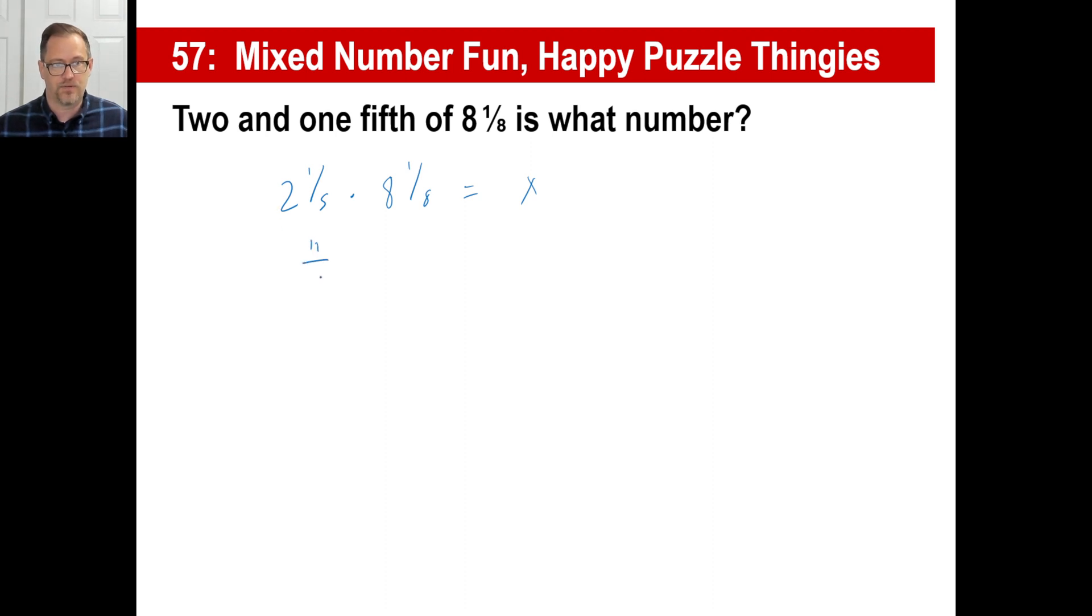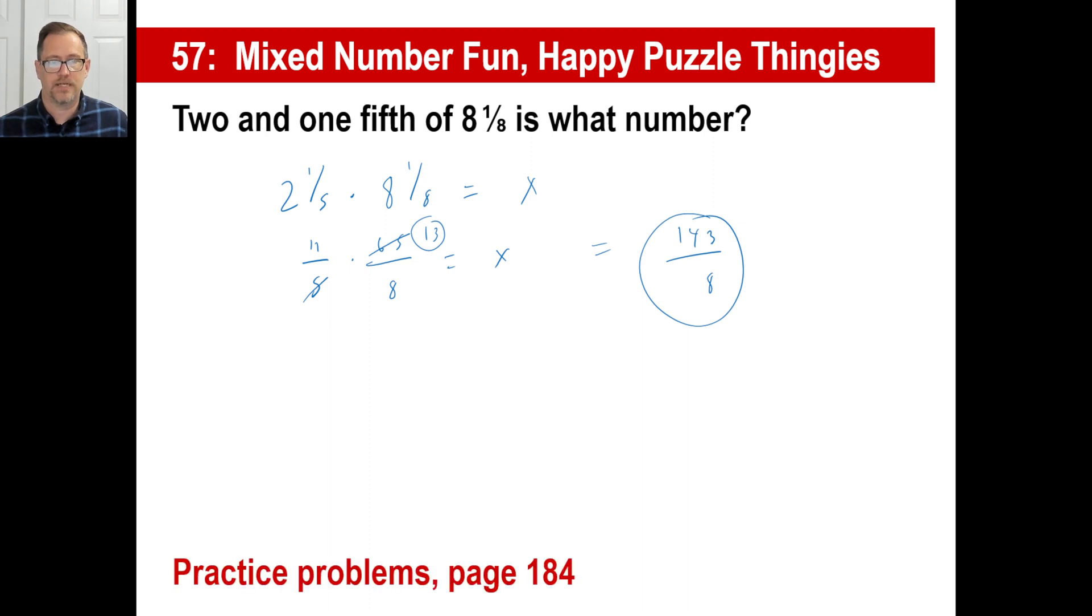Let's do it. Two and a-fifth is eleven-fifths. And eight and one-eighth, good gracious, eight times eight plus one is 65. Holy Moses. Equals X. So at least this knocks down a little bit, right? Five goes into both of those. Well, it goes 13 times. Eleven times 13 is 143, and eight times one is just eight. And there you go.